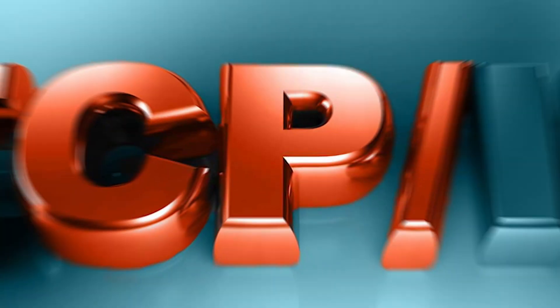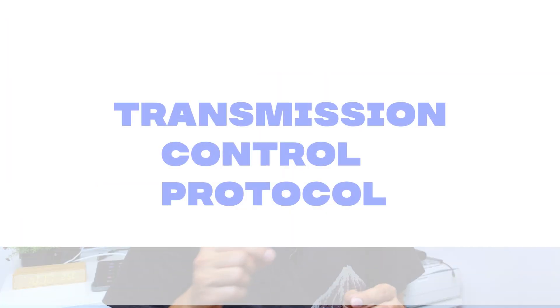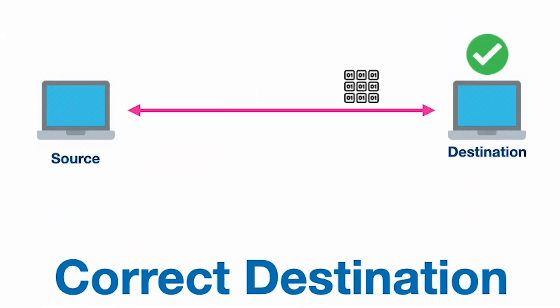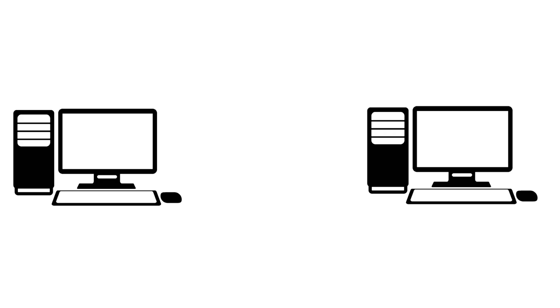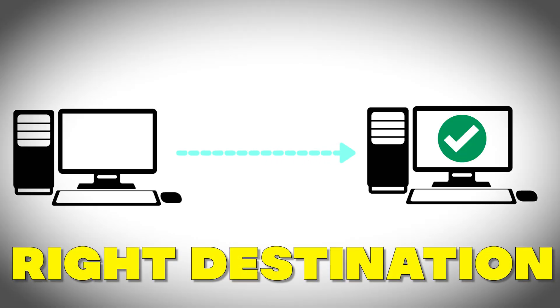The next problem with packet switching is: how do you ensure that data transmitted as packets has reached the correct destination without any packet loss? That's where Vint Cerf and Bob Kahn introduced TCP/IP. TCP, Transmission Control Protocol, ensures error-free delivery and reassembly of packets at the destination, while IP, Internet Protocol, ensures the packet is delivered to the right destination.